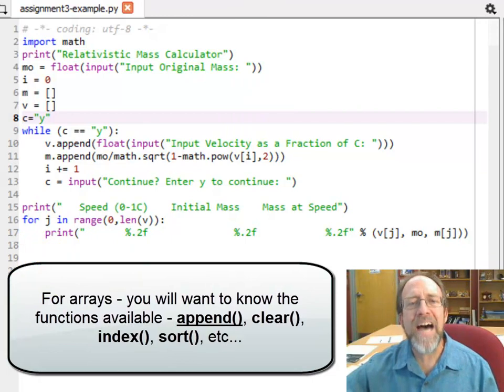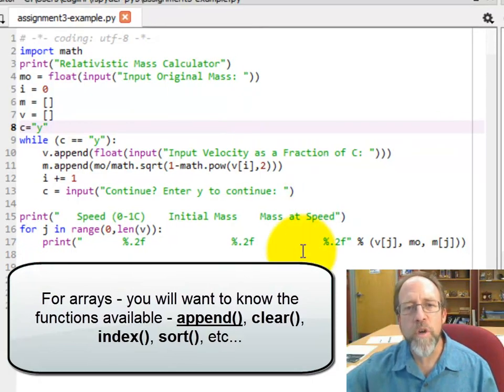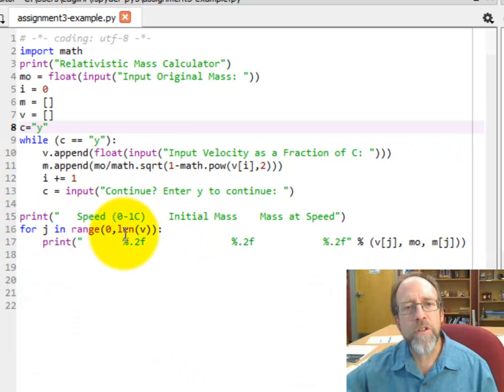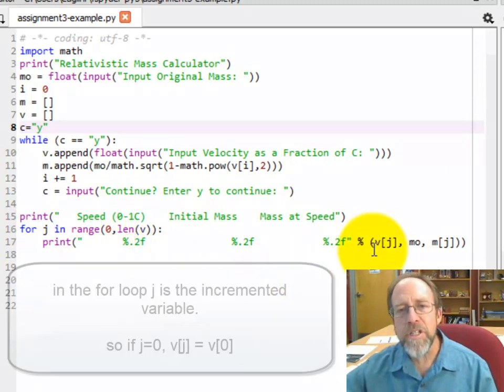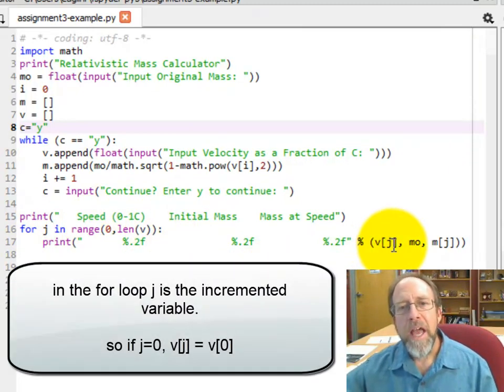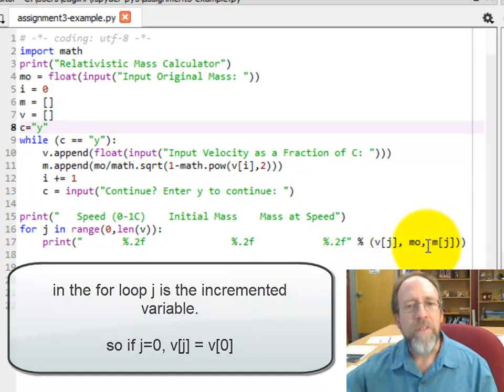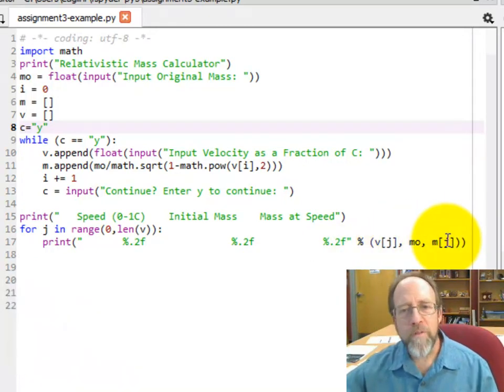Now one thing I did not explain in the original explanation is over here, because j goes from 0 to the length of v, and the array is indexed by integers, v of j and m of j, which are both right there and there, are going to be the values that you input over here that are going to have those indexes.